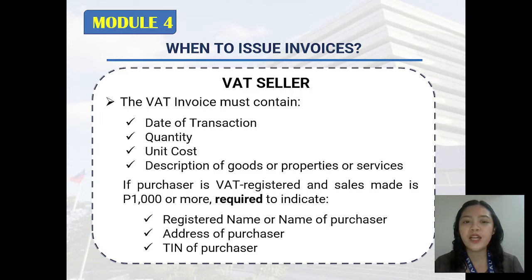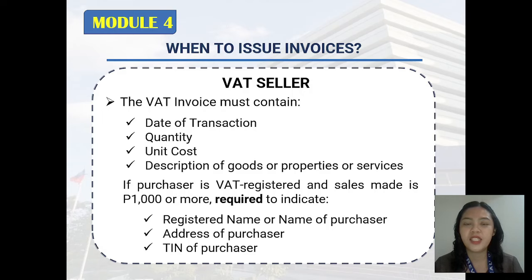Furthermore, the VAT invoice of a VAT seller must contain the date of transaction, quantity, unit cost, and the description of goods or properties or services. If the purchaser is VAT registered and the sale meets 1,000 pesos or more, it is required to indicate the registered name of the purchaser, the address of the purchaser, and their TIN.